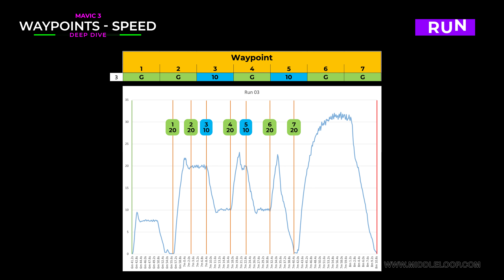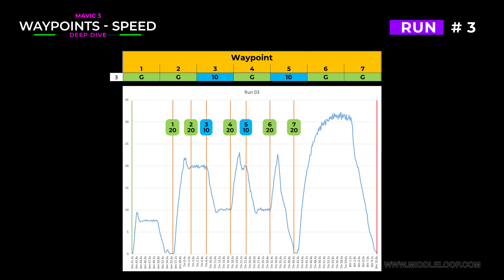Run number 3: waypoints 3 and 5 are set to 10 miles per hour. Again, starting out pretty much the same as we've come to expect, getting up to speed and not dropping down until after the first 10-mile-per-hour waypoint. Then it gets back up to 20 after the 4th and drops back down to 10 after the 5th. Then after the 6th waypoint, it heads back up to 20 miles per hour, overshooting a bit and immediately decelerating to a stop at the last waypoint.